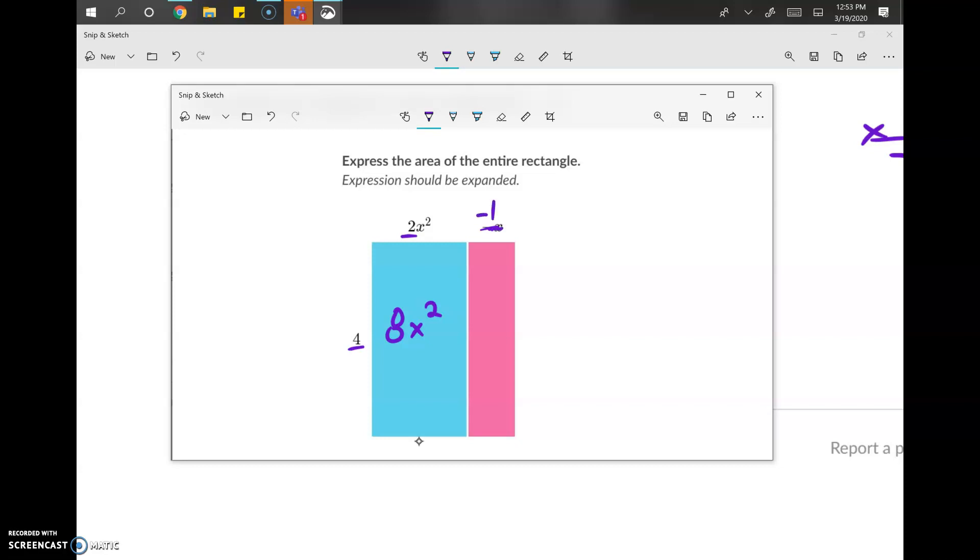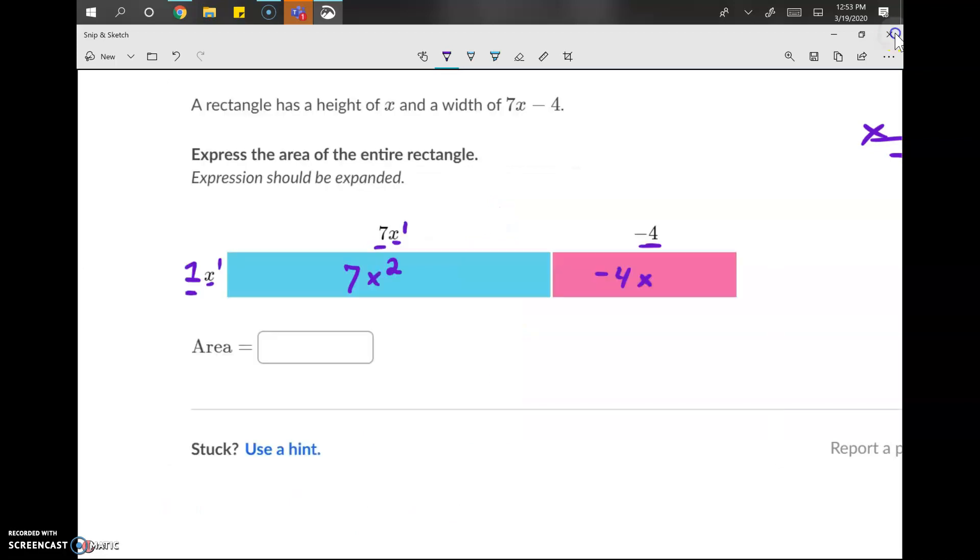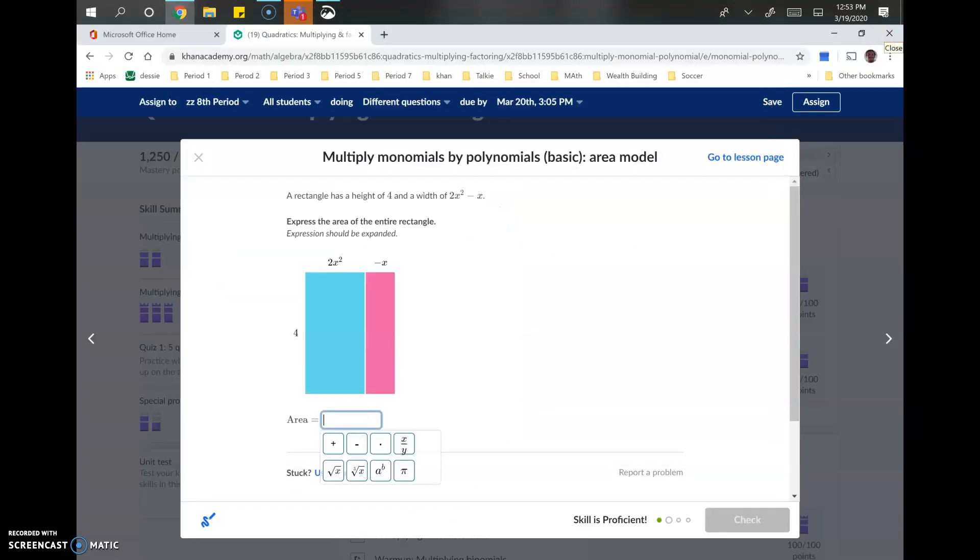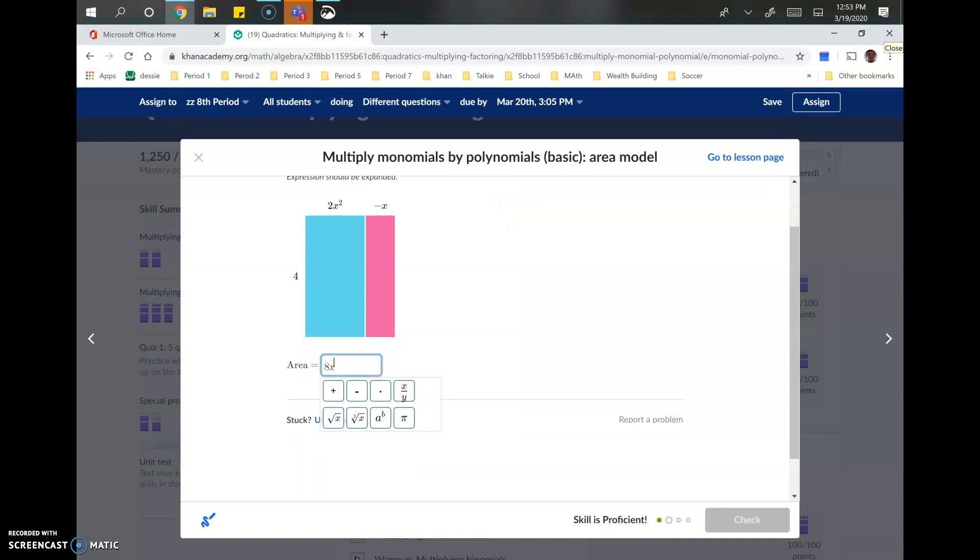And then we've got, let's see, negative. We can go ahead and make this a negative 1X if we want. So we've got negative 1 times 4, which is negative 4. Times X is negative 4X. So these, again, are not like terms, so we can't combine them. So our final answer is 8X squared minus 4X, just like that.